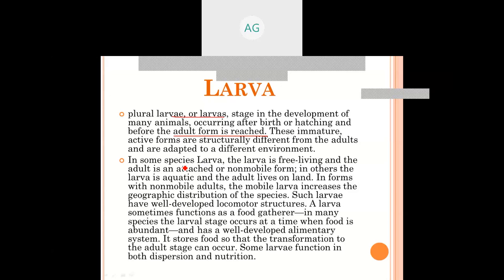In incomplete metamorphosis, there will be fewer modifications — for example, genital organs will be less developed — but superficially and morphologically, nymphs are similar to the adult. In complete metamorphosis, the larva completely differs from the adult form. These immature active forms are very active, structurally and morphologically different from the adults.